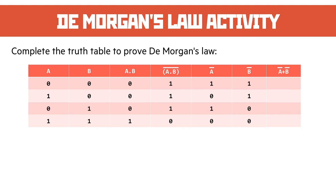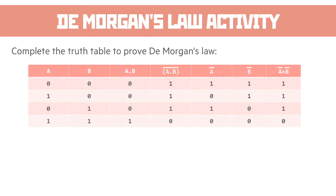If you look, the columns for NOT (A AND B) and NOT A OR NOT B are identical outputs. So we know that law is true because the outputs of both columns are the same.